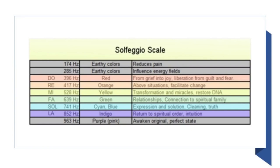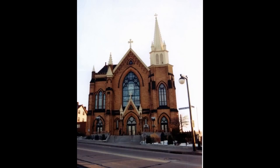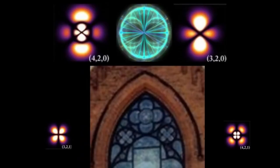Solfeggio frequencies make up the ancient six-tone scale used in sacred music like Gregorian chants and Tibetan singing bowls. Each solfeggio tone is a frequency that can be used to balance one's energy and keep one's body, mind, and spirit in harmony. The windows at the front of St. Mary of the Mount Church on the edge of Mount Washington in Pittsburgh also resemble the patterns of some hydrogen wave functions. Could this type of window be connected to atomic wave functions?